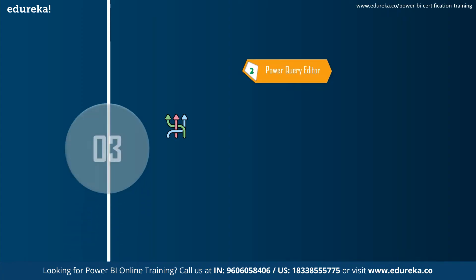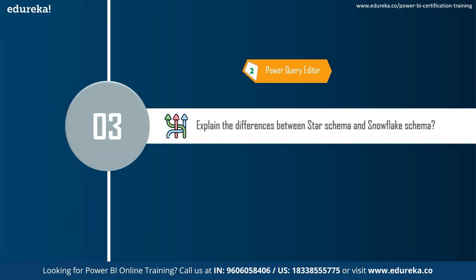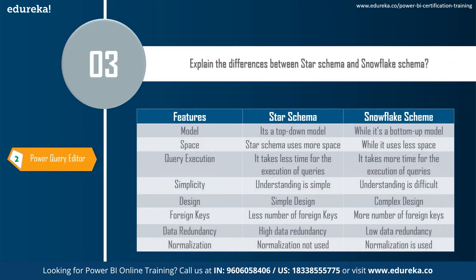The next question is: what is the difference between star schema and snowflake schema? Star schema performs better and joins are simpler, whereas in snowflake schema the joins are complex and optimization takes more time. The features used to compare them include model, space, query execution, simplicity, design, foreign keys, data redundancy, and normalization. Star schema is a top-down model using more space, while snowflake schema is a bottom-up model using less space. Star schema does not use normalization, whereas snowflake schema does.